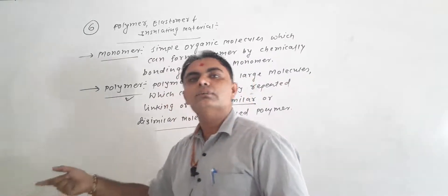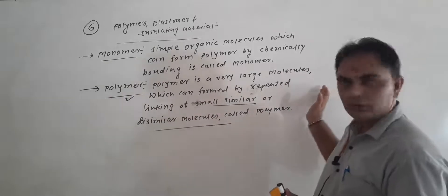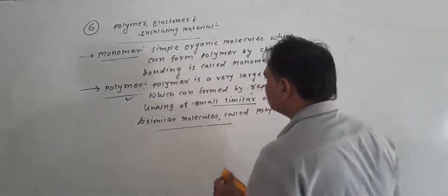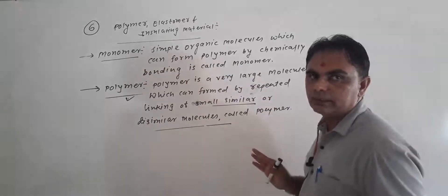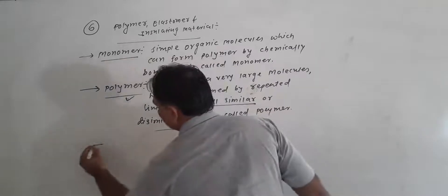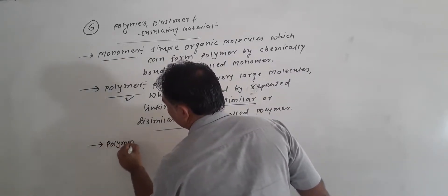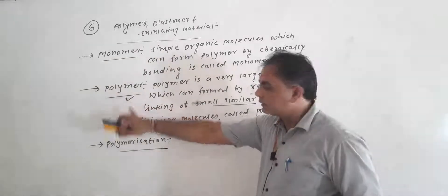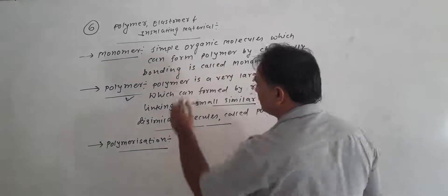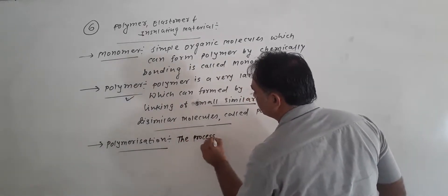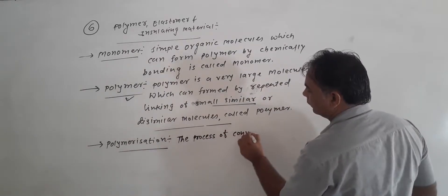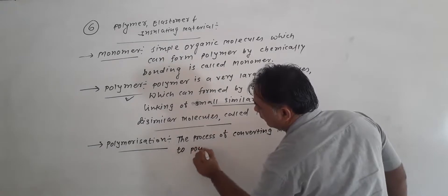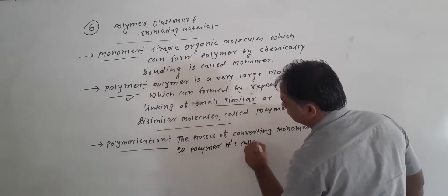The polymer is a very large molecule which can form by repeated linking of small, similar or dissimilar molecules, called polymer. So monomer and polymer concepts are clear. Now the third concept — polymerization. The process of converting monomer to polymer is called polymerization.